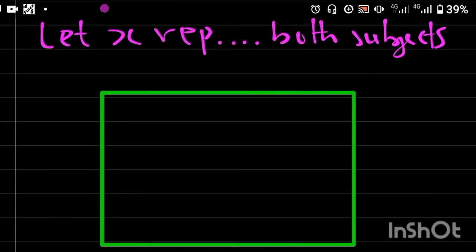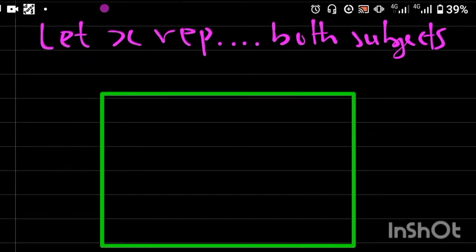This rectangle represents our universal set, and the question says that in a class of 40 students, therefore the universal set is 40.